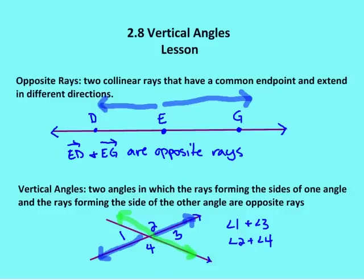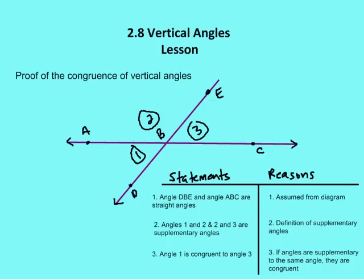Why do we care about what a vertical angle is? We know that vertical angles are actually congruent. Let's go through a proof of the congruence of vertical angles. I know that angle ABC and angle DBE, based on the diagram, are going to be straight angles, so I can assume I have two straight lines. Angle one is supplementary to angle two, and angle three is supplementary to angle two, because angle one and two form a straight line and angle three and two form a straight line. By the definition of supplementary angles, angles one and two are supplementary and angles two and three are supplementary. Therefore, angle one is congruent to angle three, because if two angles are each supplementary to the same angle, they are congruent to each other.